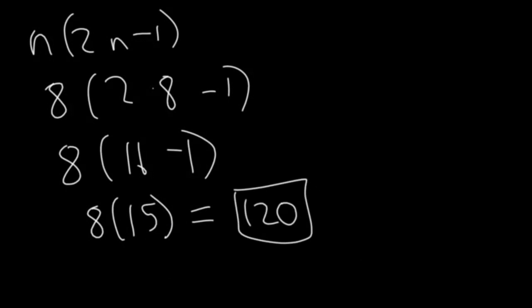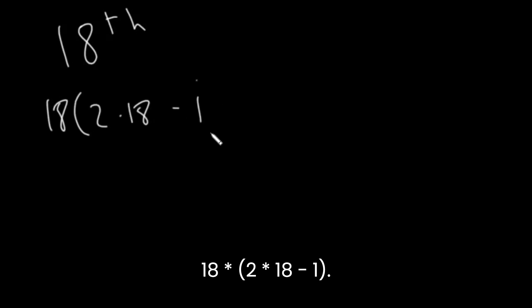Next, let's try finding the 18th hexagonal number. So plugging into the formula, we have 18 times 2 times 18 minus 1. This is 18 times 36 minus 1. This is 18 times 35.